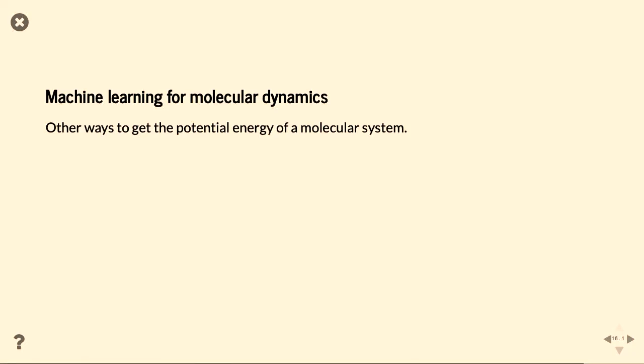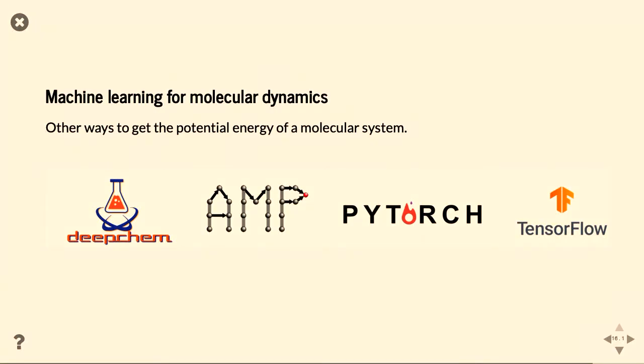So, for the simulation, a lot of people are interested in using machine learning to get the potential energy instead of going through that flawed, inaccurate function. And everyone uses Python. So, on the left, you can see two packages that are specially for chemistry, the deep chem and the atomistic machine learning package, I think. And, you know, on the right, everyone uses PyTorch and TensorFlow.